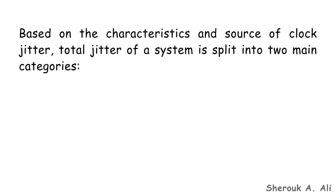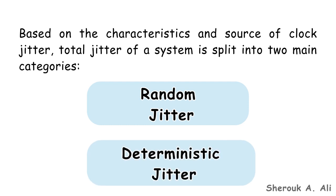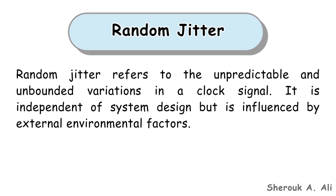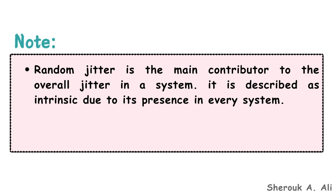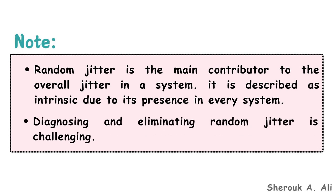Now let's explore the types of clock jitter. Based on the characteristics and source of clock jitter, total jitter of a system is split into two main categories: random jitter and deterministic jitter. Random jitter refers to unpredictable and unbounded variations in a clock signal. It is independent of system design but influenced by external environmental factors, and is typically caused by thermal noise and other uncorrelated noise sources. Random jitter is the main contributor to overall jitter in a system and is described as intrinsic due to its presence in every system. Diagnosing and eliminating random jitter is challenging.